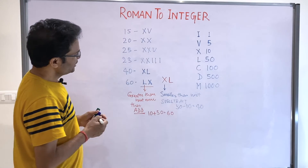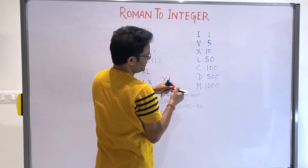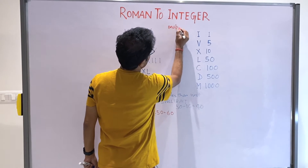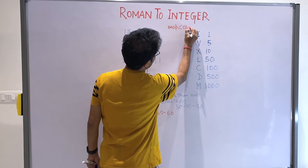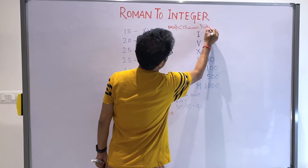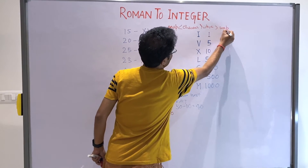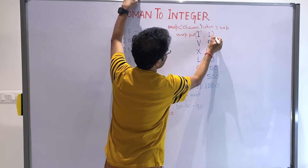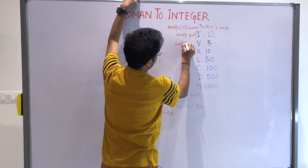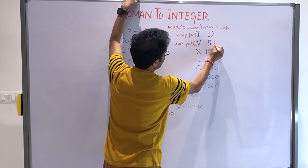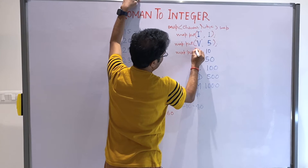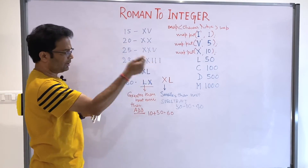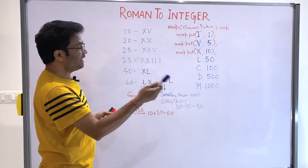So how will you do that? Because we are always going to check each character value, it is better to make one Map in Java. In this map, keep two things: the character and its integer value. Give it a name like 'map'. You do map.put with the character and the number. Once you have the map, if any Roman numeral string is given, you start from the rightmost character.